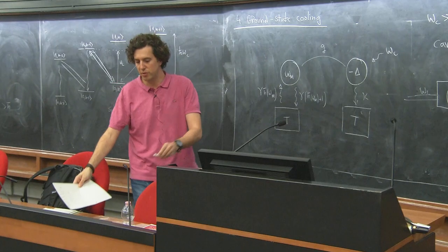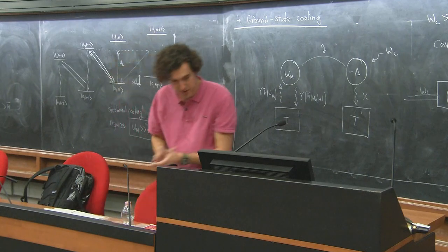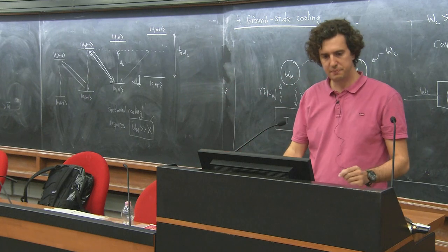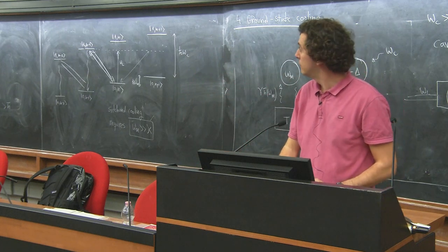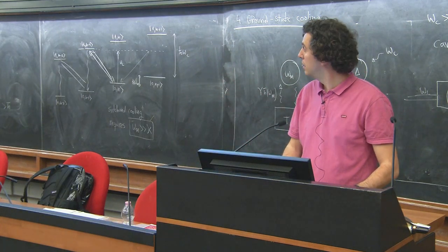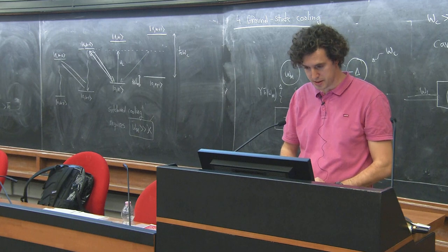A simulation confirms this: starting from 10,000 phonons with parameters fulfilling the sideband resolution and cooperativity conditions, the phonon number decays exponentially to below 1 — the ground state. With slightly degraded kappa (too large compared to omega_m), cooling stops above 1. The main goal of this lecture was to derive, from first principles, the linearized Hamiltonian plus dissipation from which all this physics can be studied exactly. And with that, we conclude the lecture.